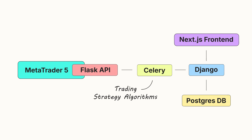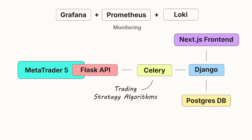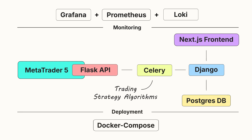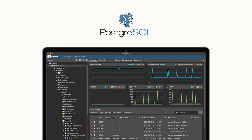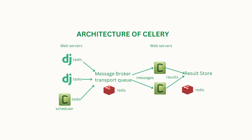One: trading algorithm infrastructure built with Django. Django is the backbone of our project, chosen for its scalability, clean architecture, and robust ecosystem. It allows seamless integration with Celery for task scheduling and Postgres for database management. With Django REST Framework (DRF) we can efficiently create APIs to facilitate communication between components, including a front-end dashboard. Two: integration with Postgres database, a powerful open-source object-relational database system that safely stores and scales complex data workloads.